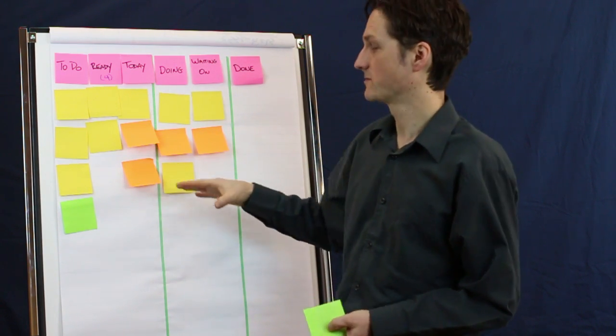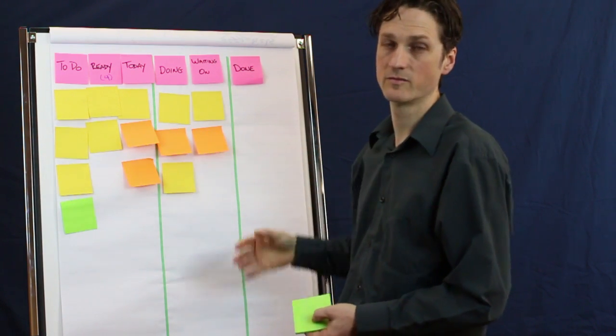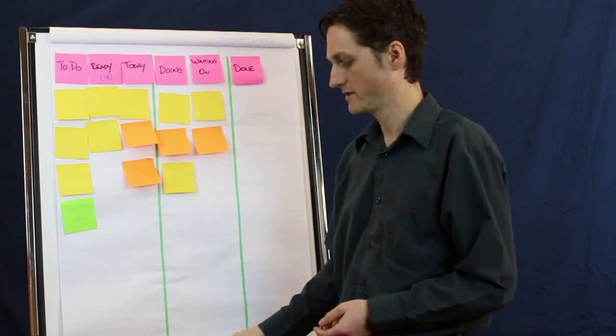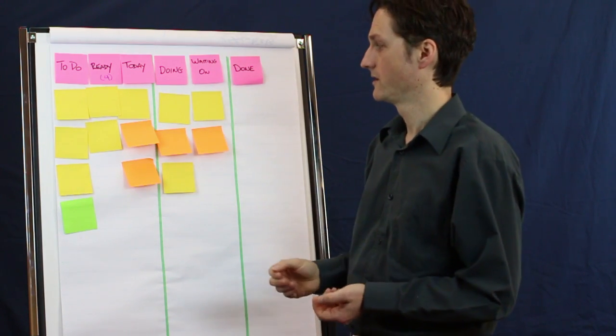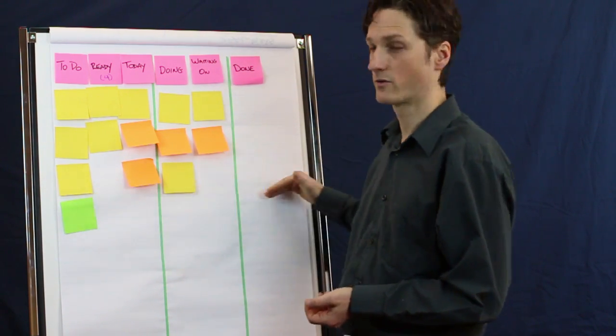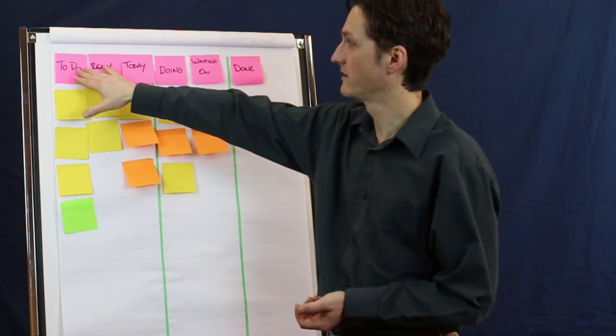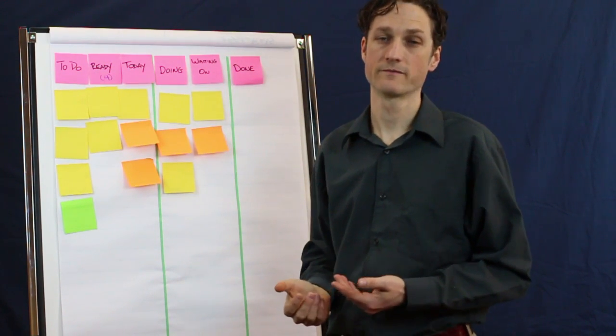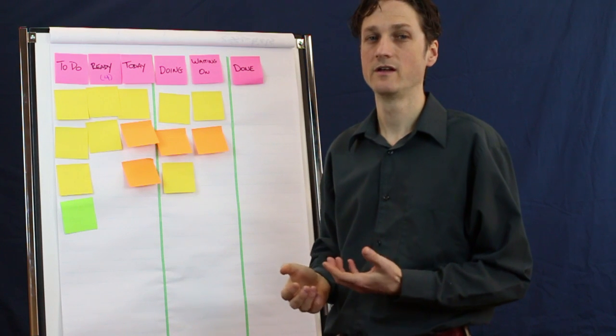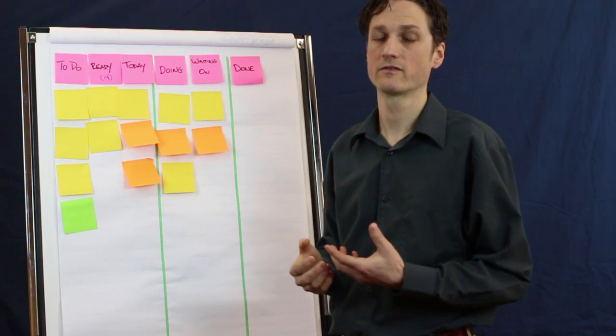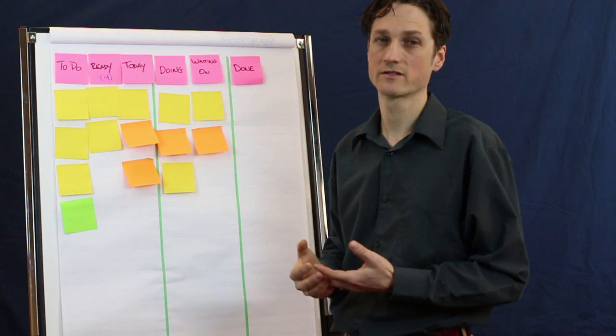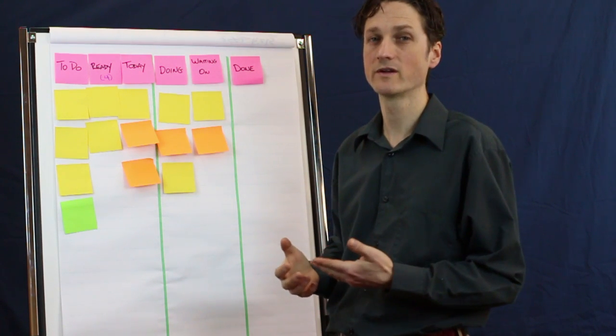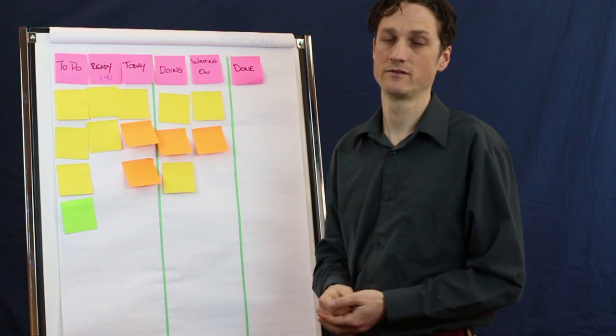As well, we can also group things by using different lanes, in particular if you have work that takes on a different workflow. You may want to have another horizontal lane with the column names for each of the steps in the workflow. Again, you want to make all that explicit so that you have a lot of clarity and understanding as to where things are in the process, so there's less thinking about what to do and more focus just on doing.